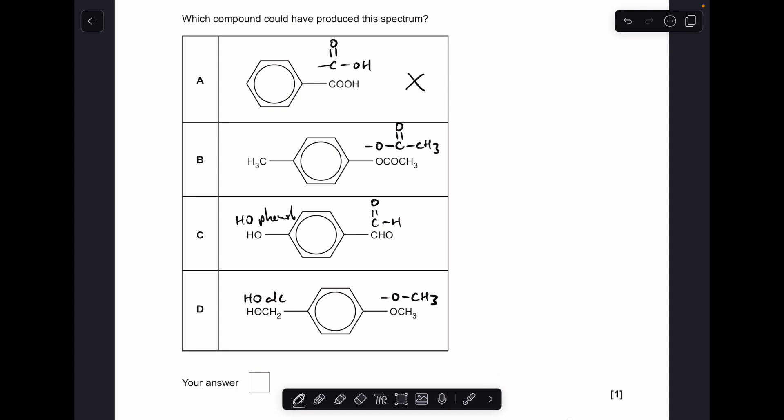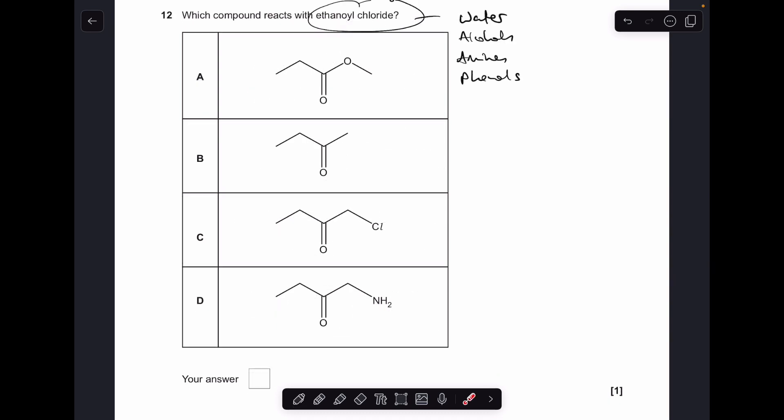B, we've got an ester group there, so we've got the C double bond O, but we haven't got the OH of an alcohol, so it's not that one. C, we've got the OH of a phenol and we've got the C double bond O of the aldehyde group, so yep, that's the answer. We'll just rule out D. We've got the OH of an alcohol and we've got a single bond O to single bond CH3, so obviously that's not going to be the right answer.